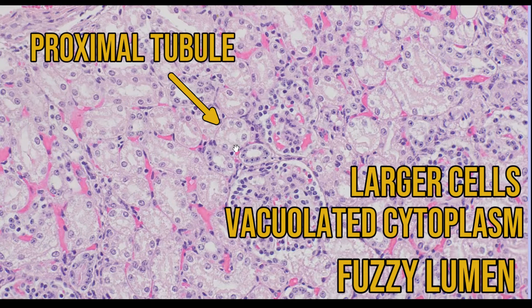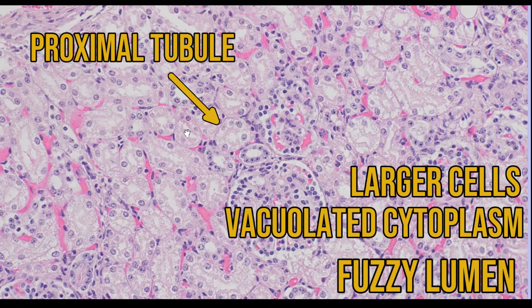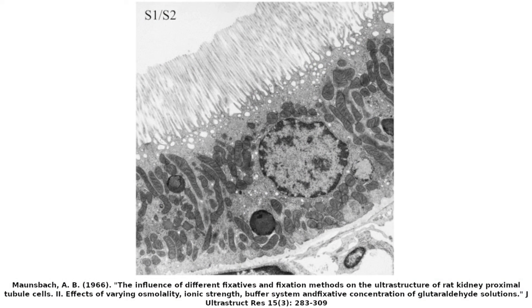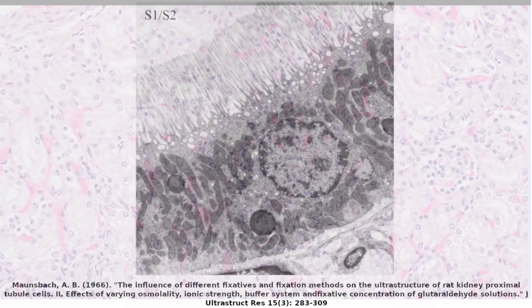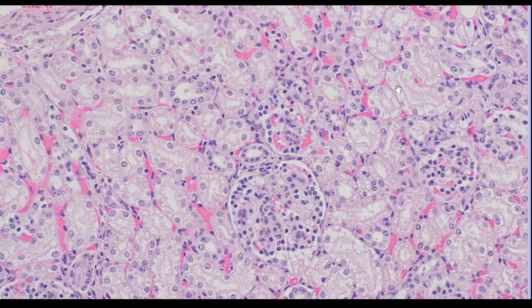The proximal tubule lumen is kind of occupied partially by this fuzzy pink material — especially visible just at this border here. This is the brush border. These cells are absorbing lots of molecules from the primary filtrate, so they need to increase their surface area, and this tubule here is a particularly fine example.